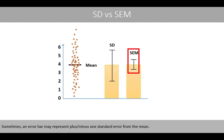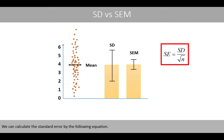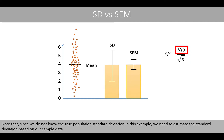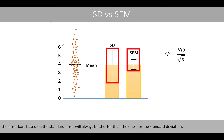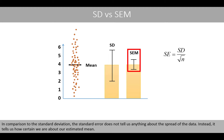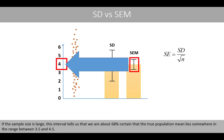Sometimes, an error bar may represent plus or minus one standard error from the mean. We can calculate the standard error by the following equation. Note that, since we do not know the true population standard deviation in this example, we need to estimate the standard deviation based on our sample data. Since the standard error is calculated by dividing the standard deviation by the square root of n, the error bars based on the standard error will always be shorter than the ones for the standard deviation. In comparison to the standard deviation, the standard error does not tell us anything about the spread of the data. Instead, it tells us how certain we are about our estimated mean. If the sample size is large, this interval tells us that we are about 68% certain that the true population mean lies somewhere in the range between 3.5 and 4.5.